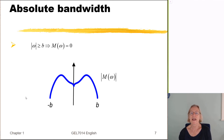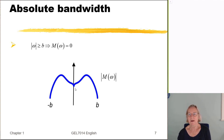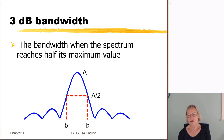For absolute bandwidth, consider a message signal m(ω) which is exactly zero for all frequencies above some maximum frequency. In this case, the bandwidth of the signal is clearly 2B — twice the maximum frequency of the signal. This is the easiest concept.